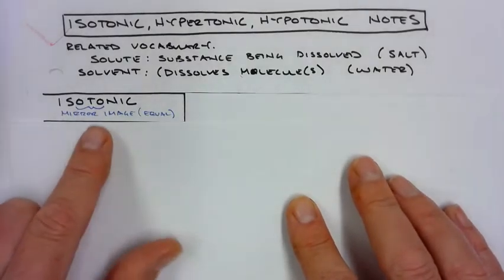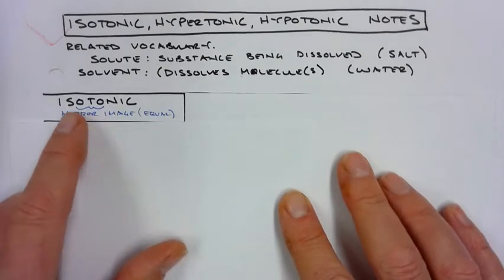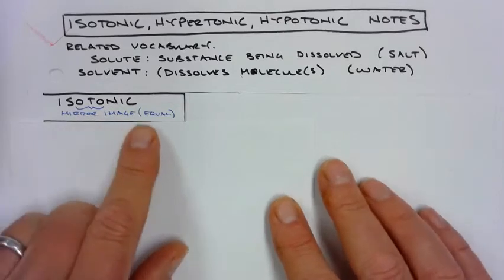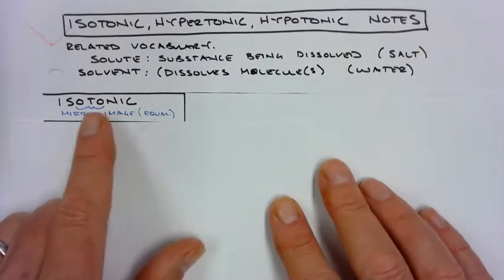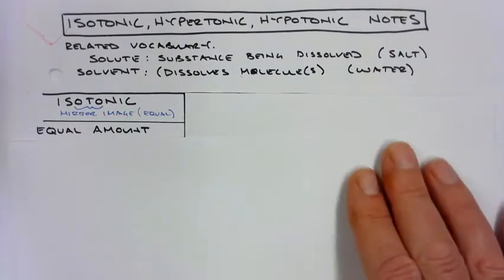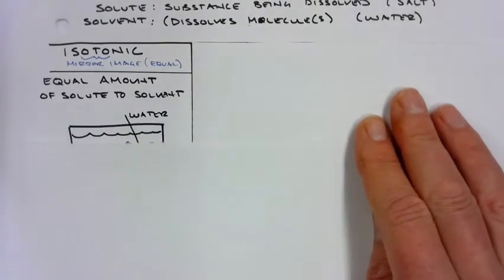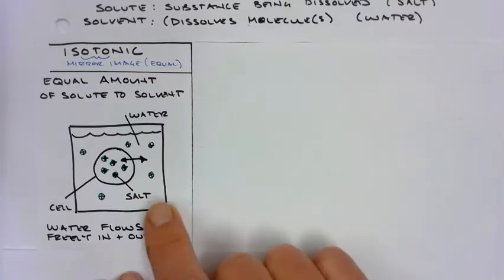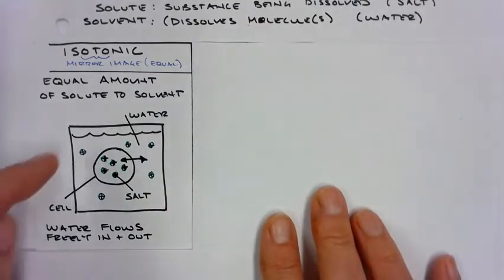I have a learning tool that I use, and I look at the two O's on either side of the T, and it kind of looks like a mirror image to me. So I call this equal or isotonic.